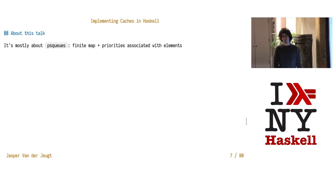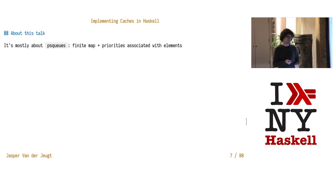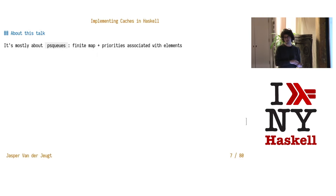PSQs can be described as having a finite map — like a dictionary or data.map — together with some sort of priority system. This turns out to be a pretty amazing blend, but also a bit hard to get right. We're going to look at two ways of implementing this, both of which are in this library.